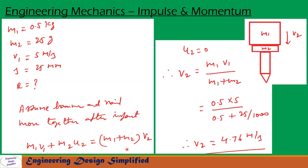So this equation will become v2 = m1·v1 / (m1 + m2). So this is the v2, that is the velocity of both hammer and nail after impact. So after substituting the values and the simplification, we get v2 equal to 4.76 meters per second.